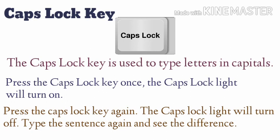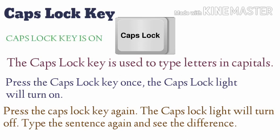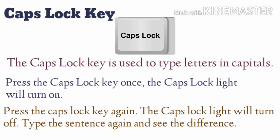Then press the Caps Lock key again and the Caps Lock light will turn off. Now type the sentence again and see the difference: when Caps Lock is on, capital letters will appear, and when it is off, all letters will be small.